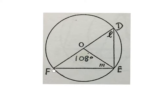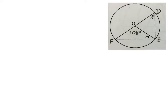In this sketch they gave me a circle with F, E, and D on the circumference. They told me FOD is a diameter and gave me the angle at O as 108 degrees. We want to find M and L. On the sketch, the diameter means we'll have a 90 degree angle, and we have radii here and here making certain angles equal.